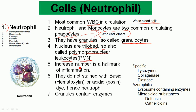Neutrophils increase after inflammation, and this increased number of neutrophils after inflammation is a hallmark of inflammation — when the neutrophil cell number increases, we know that something is happening, and that is called inflammation. They do not stain with either the basic dye hematoxylin or the acidic dye eosin, which is why they are called neutrophils — because they are neutral to either dye.